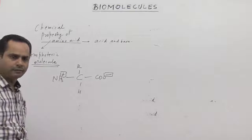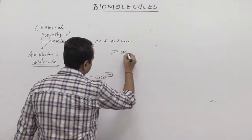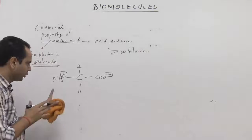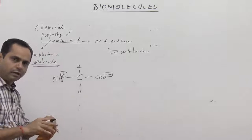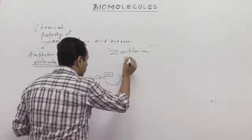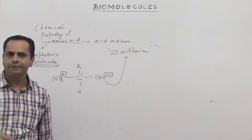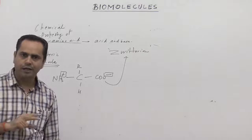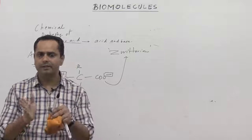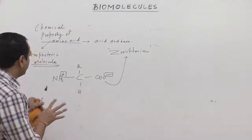This term called zwitterion is also mentioned in your textbook. A zwitterion is simply a molecule which contains both positive and negative charge in the same molecule at the same time. Presence of both positive and negative charge in the same molecule at the same time — this kind of molecule is called a zwitterion. So there are two chemical properties of amino acids: first, it is an amphoteric molecule; second, it is also called a zwitterion, because it has both acidic and basic nature.